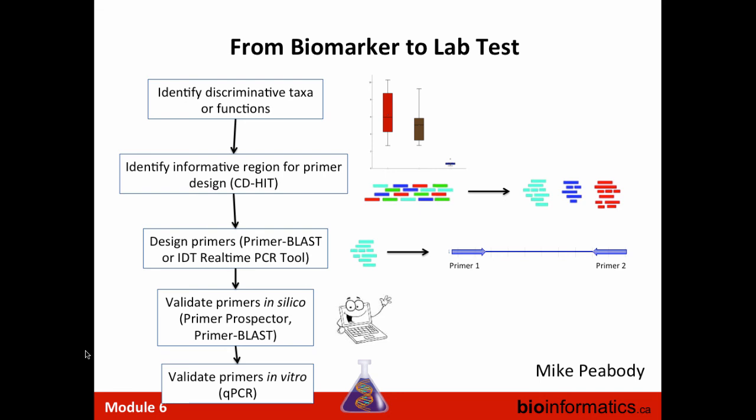To design the actual test: once the biomarker is identified — descriptive taxa or functions — find the important primer region, design the primers, run PCR, validate the primers in silico, and then validate them experimentally. This is the overall workflow for going from biomarker discovery to a deployable test.